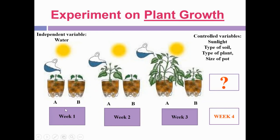Plant growth was observed from week 1 until week 3. During week 3, we can clearly see that Plant A grew higher than Plant B. Predicting week 4, Plant A would grow even higher than Plant B. This clearly shows that the control group is used to compare with the experimental group, and the difference between the two groups is the independent variable.